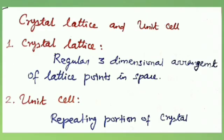The next topic is crystal lattice and unit cell. The regular three-dimensional arrangement of lattice points in space is called a crystal lattice. The points at which the constituent particles — atoms, ions, or molecules — of a crystal are found are called lattice points. The smallest part of the crystal lattice which generates the entire crystal when repeated in three dimensions is known as the unit cell.